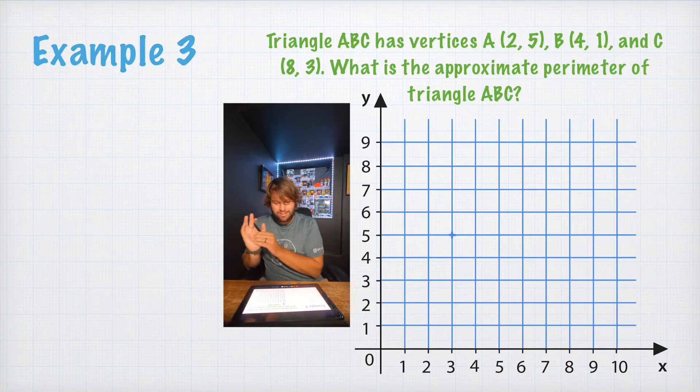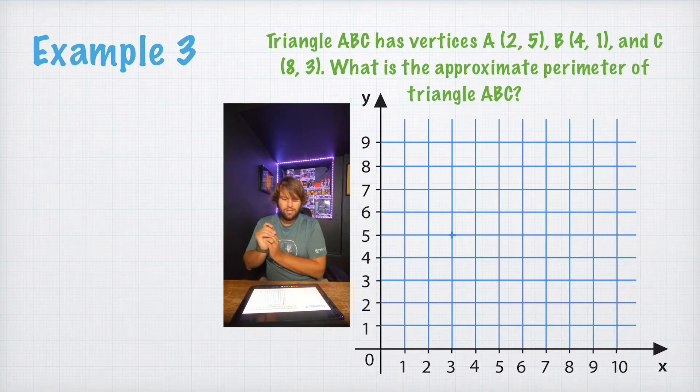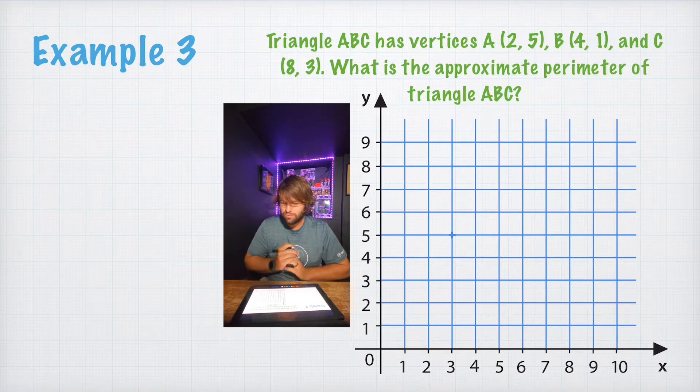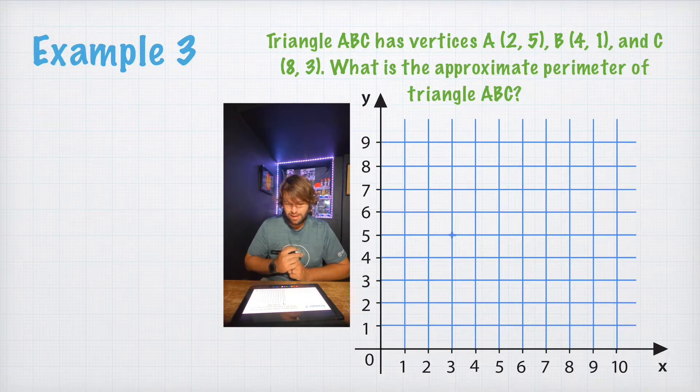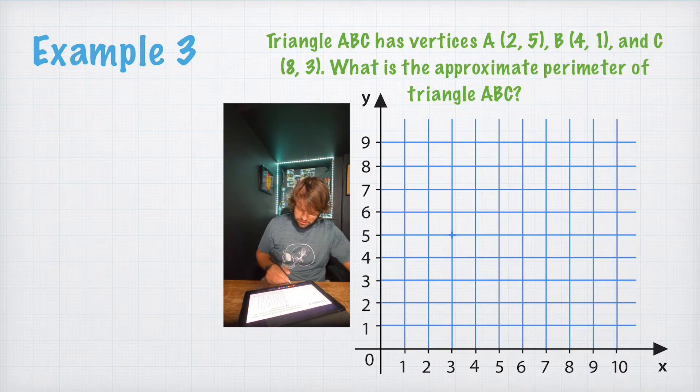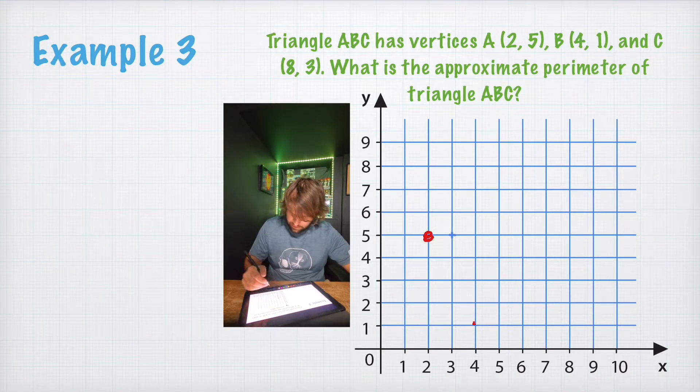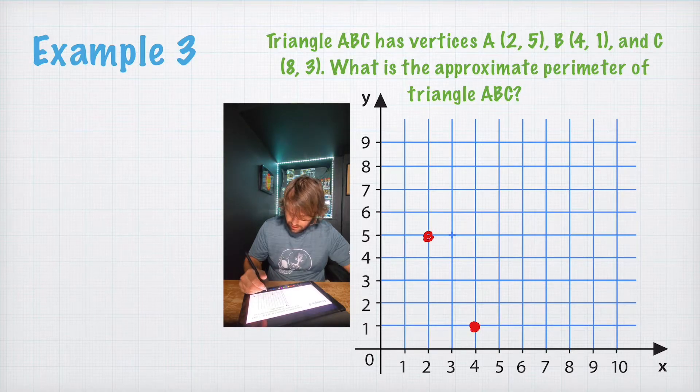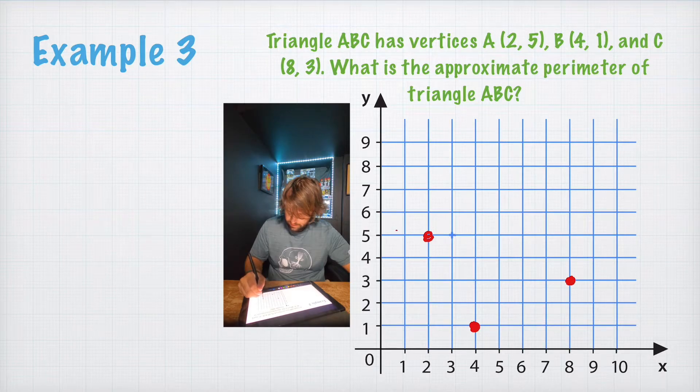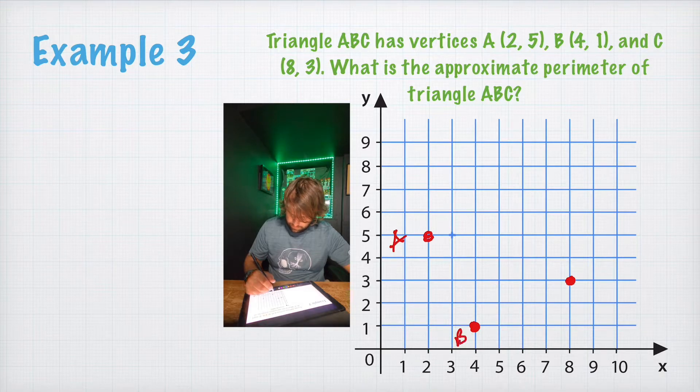Example 3. This is our longest example. So, strap in and let's get this done. Triangle ABC has vertices of 2, 5, B 4, 1, and C 8, 3. What is the approximate perimeter of the triangle? So, let's start off by just graphing ABC, which is 2, 5, 4, 1, and 8, 3. And that's going to be ABC.